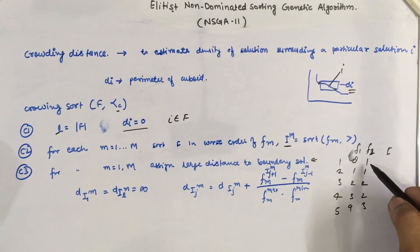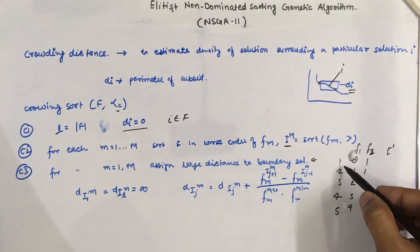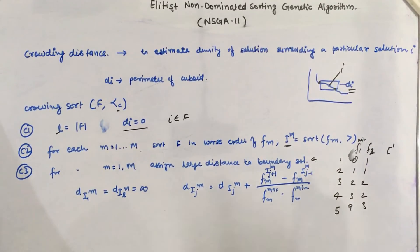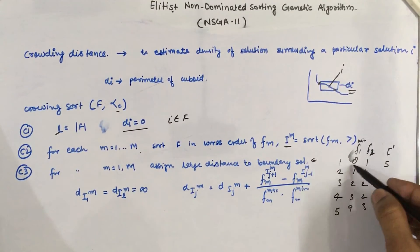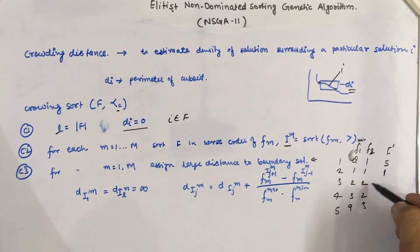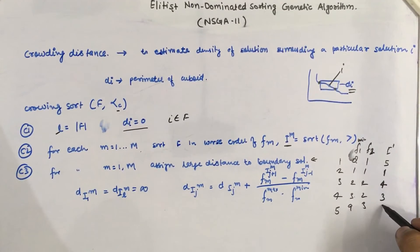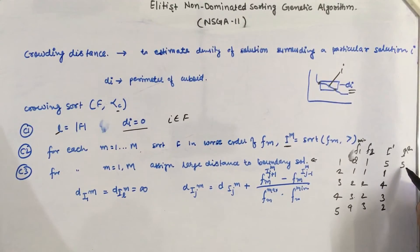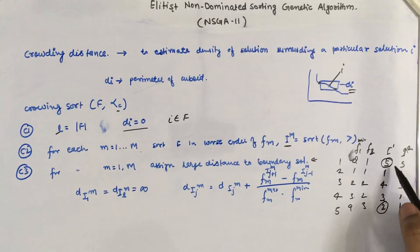We first sort according to the first objective. For a minimization problem, the maximum value is the worst. So the set I1 would be: fifth index (value 9) is worst, then solution one (8), then solution four (3), then solution three (2), then solution two (1). Similarly, for I2: worst is five, then four and three, then one and two.